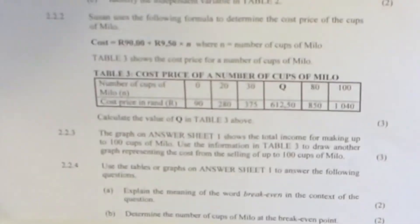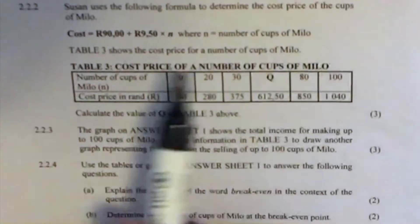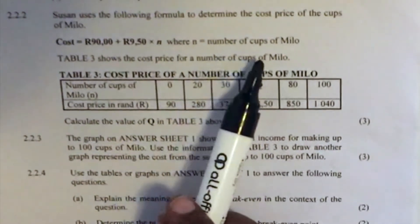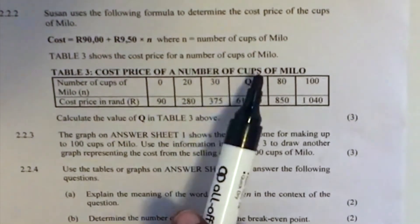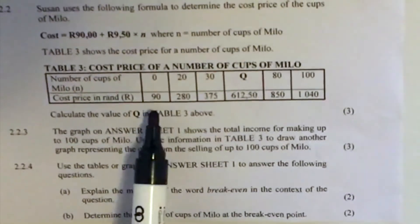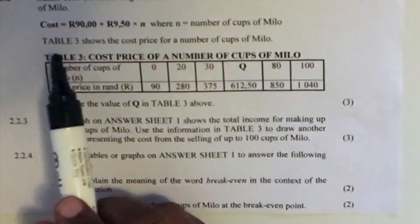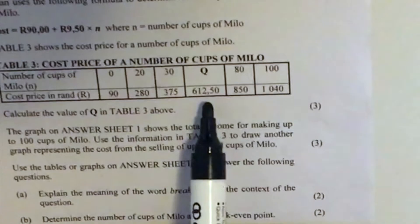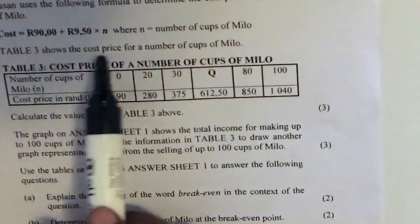Let's look at 2.2.2. Okay. Next question, 2.2.2. Susan uses the following formula to determine the cost price of the cups of Milo. Cost is equal to R90 plus R9.50 times N where N equals to the number of cups of Milo. Okay. Table 3 shows the cost price of a number of cups of Milo. So here, when she makes zero cups, it's R90. 20 cups as it goes on. So they are asking us, what will be the cost if you have the cost price R612.50. That's your cost price, right? Your Q is the number of cups. What will be your Q? And then you are given a formula that is going to help you.